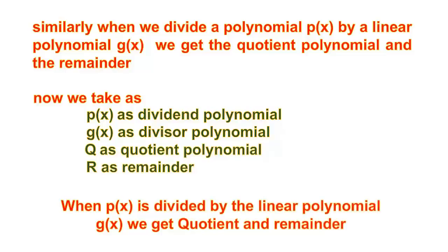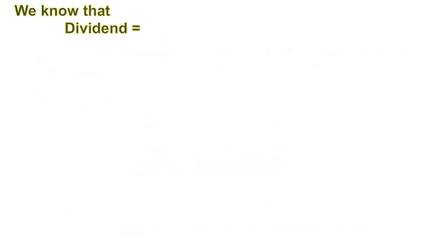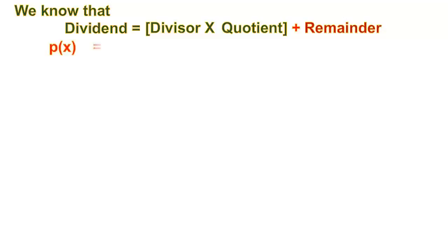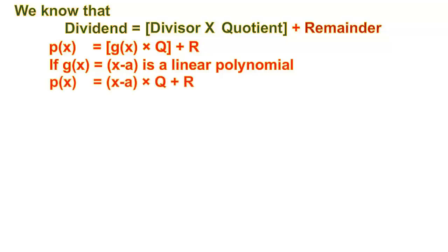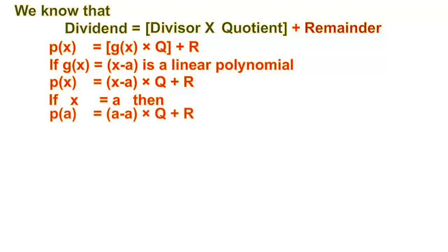If we divide P of x with linear polynomial G of x, we get Quotient Polynomial and Divisor Remainder. We know that Dividend Polynomial equals Divisor Polynomial into Quotient plus Remainder. So, P of x equals G of x into Q plus R. If G of x equals x minus A, then P of x equals x minus A into Q plus R. If x equals A, then P of A equals A minus A into Q plus R. That is, P of A equals R.